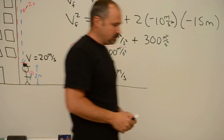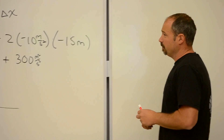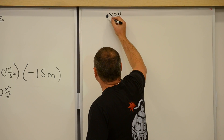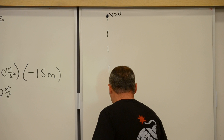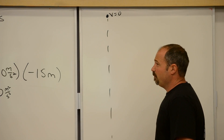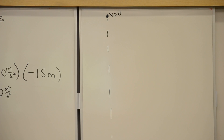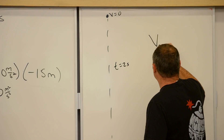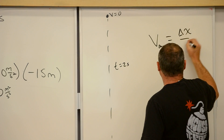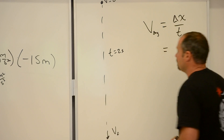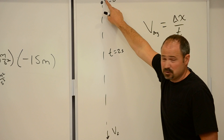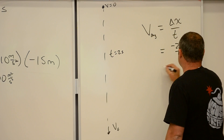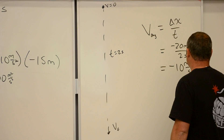Let me show you another way to do this problem. If the balloon starts up here at zero speed and ends up at some final speed we want to find, we also know the time — from the previous part, that takes 2 seconds. Using the formula for average velocity, which is displacement over time: the displacement is from 22 down to 2, so that's 20 meters, divided by 2 seconds — giving an average velocity of negative 10 meters per second.